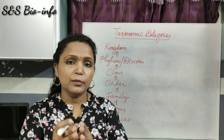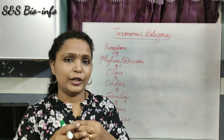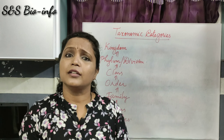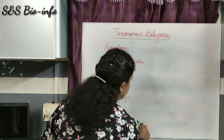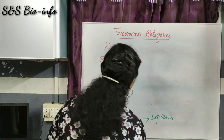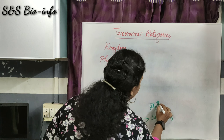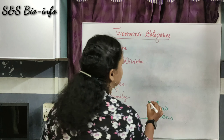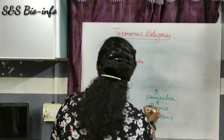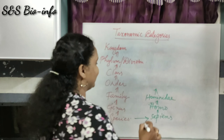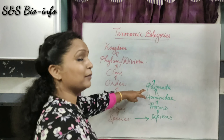Now let's understand how an animal is placed in the hierarchy of classification. For example, our scientific name is Homo sapiens: the species name is sapiens, the genus name is Homo. We belong to the family Hominidae.